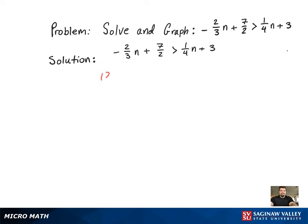Since the inequality has fractions in it, to simplify the problem, what we're going to want to do is multiply both sides by the LCD, which in this case happens to be 12.